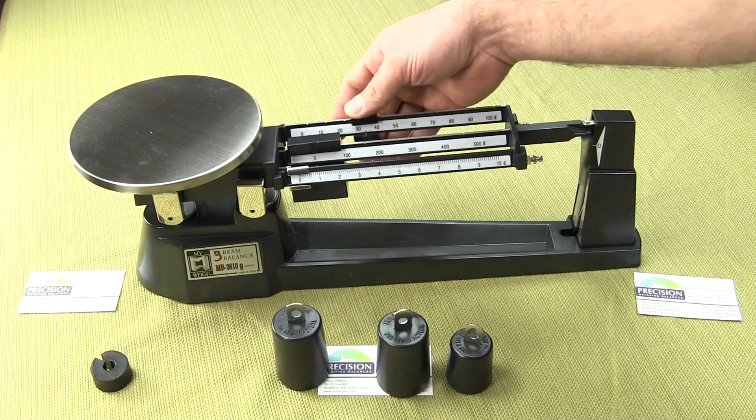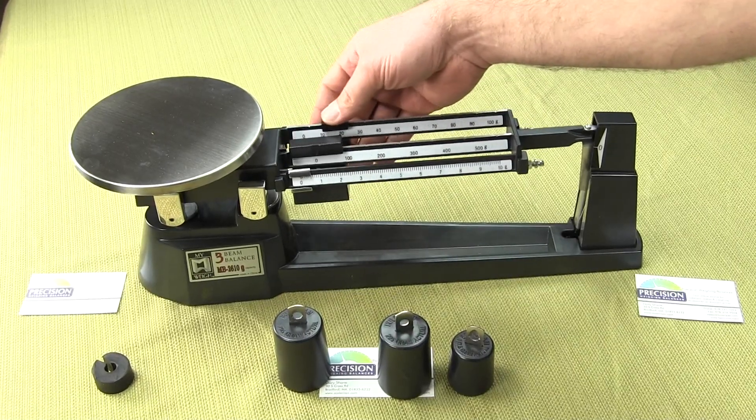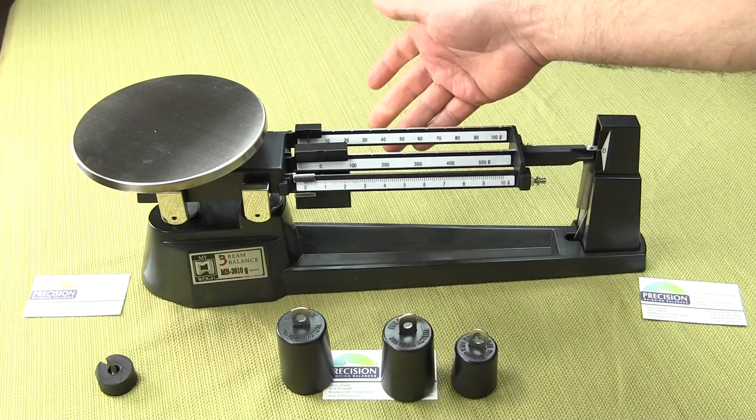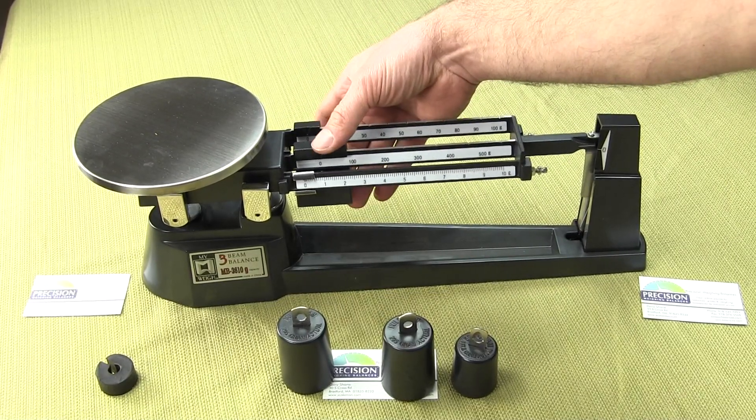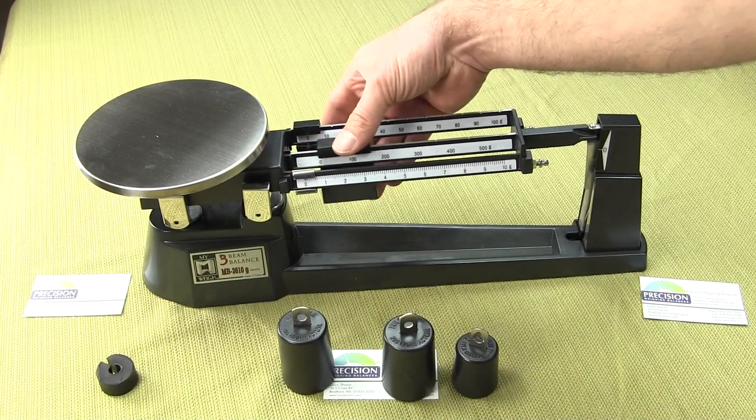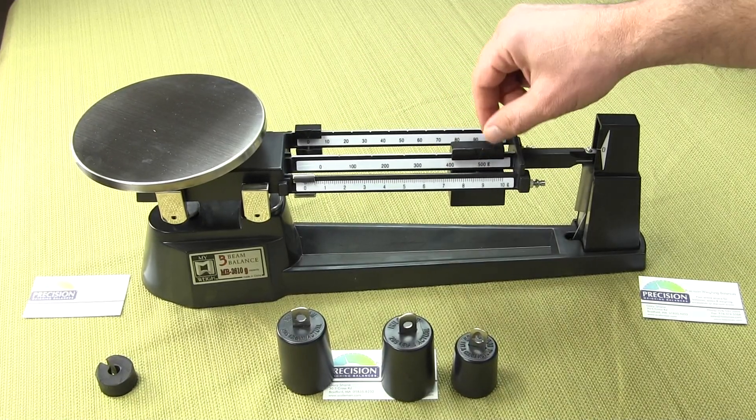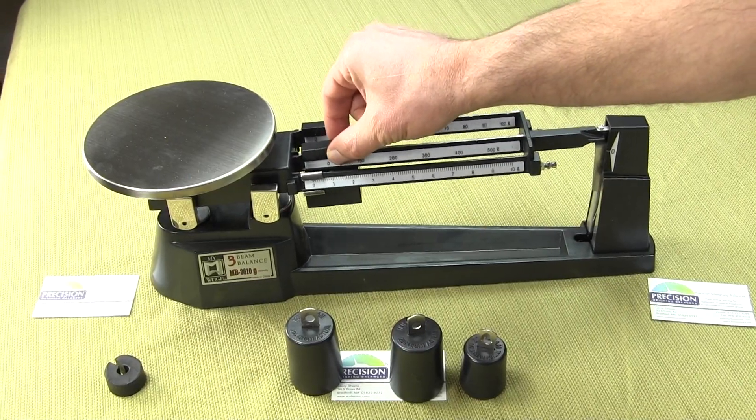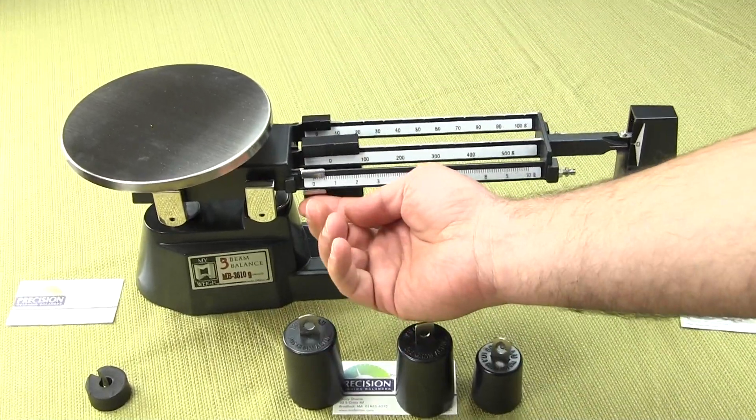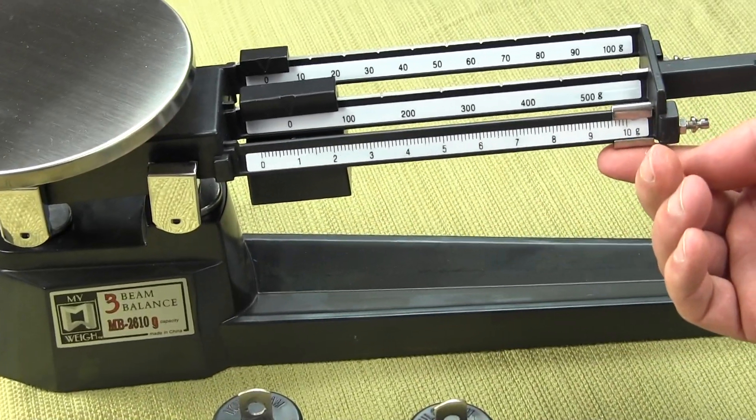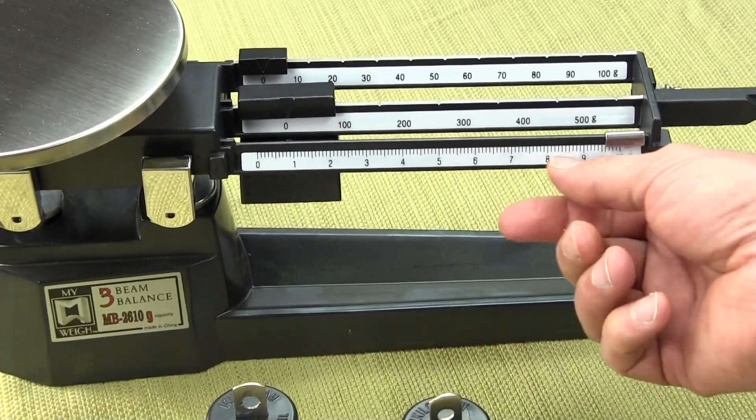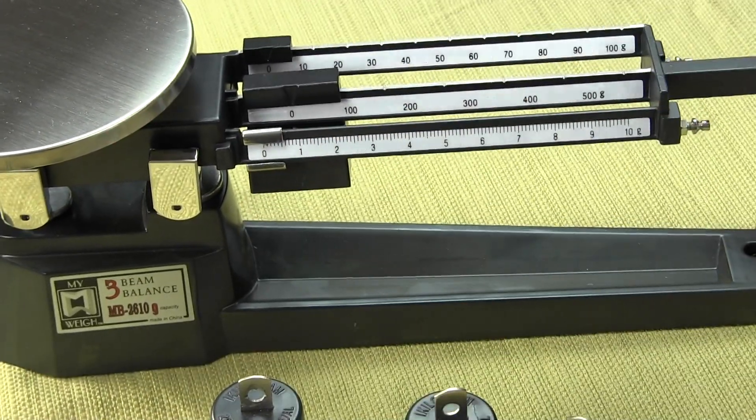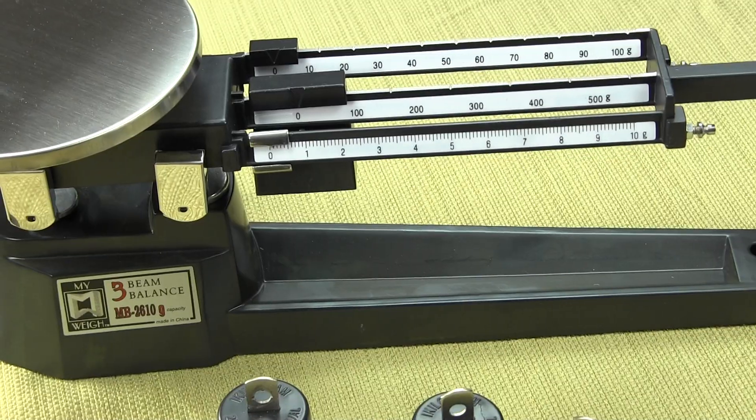In the rear, this beam goes in 10 gram graduations from 0 to 100 grams. The center beam goes from 0 to 500 grams. These pieces of metal here are called riders. The front beam or third beam goes from 0 to 10 grams in a tenth of a gram graduation. When you're weighing an object, we'll be adding all of these beams up.